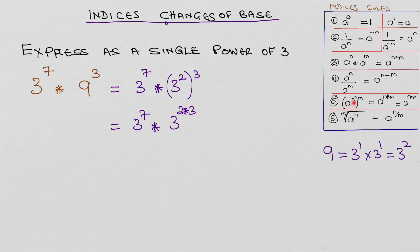You have an indices a to the power of n all to the power of m. That would be a to the power of n times m, which is a to the power of nm. And here we have 2 times 3, and that would be 6.